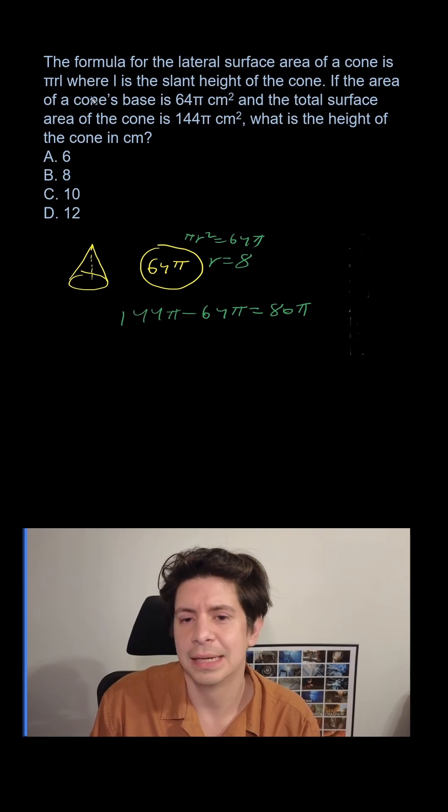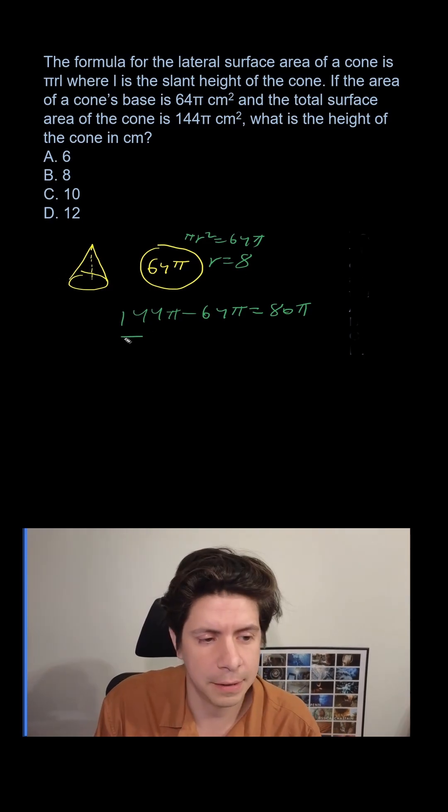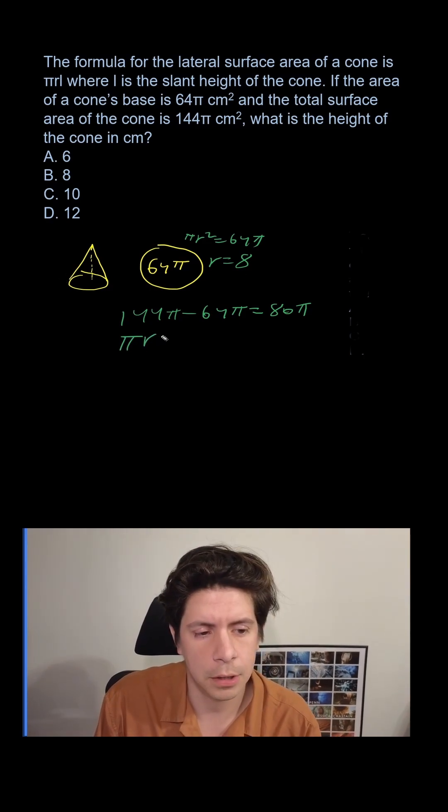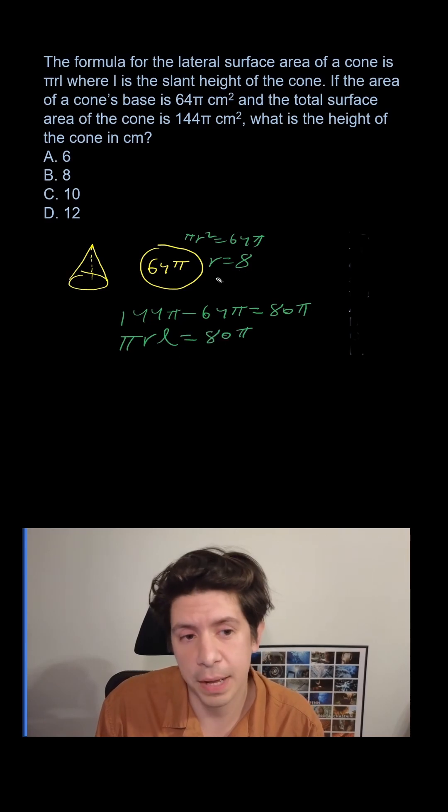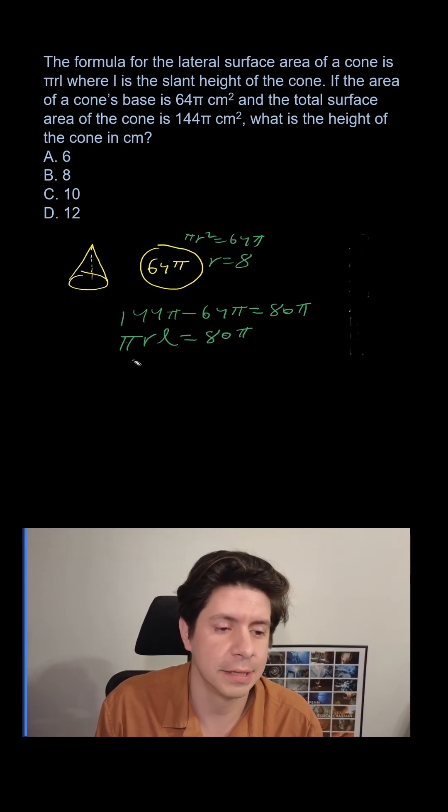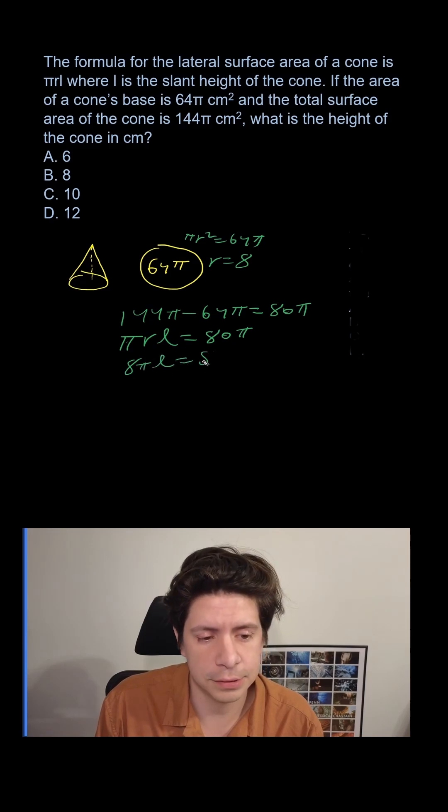So now let's look at this. It tells us L is the slant height. πRL equals 80π. So we know π is π and R is 8. So it's going to be 8πL equals 80π. Then we divide by 8π. We get L equals 10.